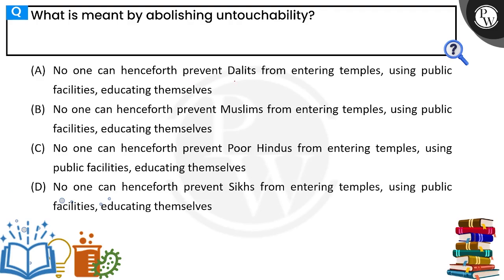No one can henceforth prevent Dalits from entering temples, using public facilities, or educating themselves. Similarly, no one can prevent Muslims, poor Hindus, or Sikhs from entering temples, using public facilities, or educating themselves. So we have four categories of people living in India covered here.